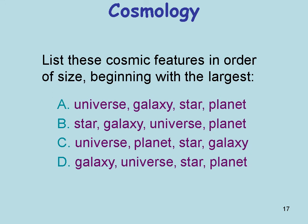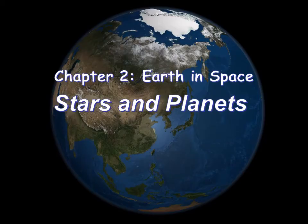List the cosmic features in order of size beginning with the largest. The largest is the universe, then a galaxy, then a star, and then a planet. We live in the Milky Way galaxy; Earth orbits the sun, which is a star; and we live on planet Earth.